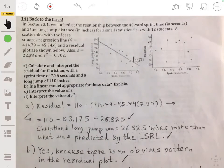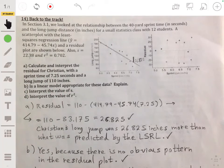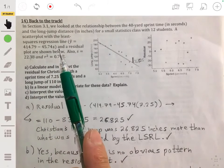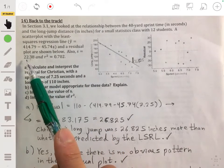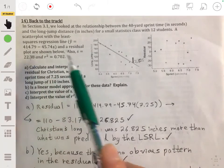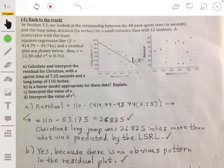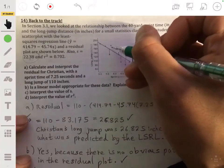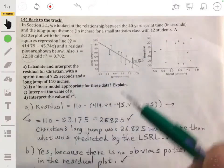All right, now part C: Interpret the standard deviation. So our standard deviation was 22.38. Now that essentially means that when we use this equation to make predictions about how far we think someone will jump based on their sprint time, our prediction will typically be off by about 22.38 inches from the actual value. So again, this is our prediction error. These vertical distances, these predictions, they're not all on the line. Some are above, some are below, so we see on average the predictions would be off by about 22.38 inches.